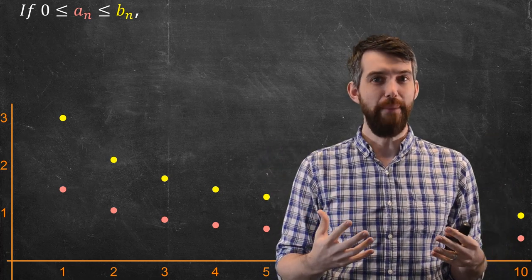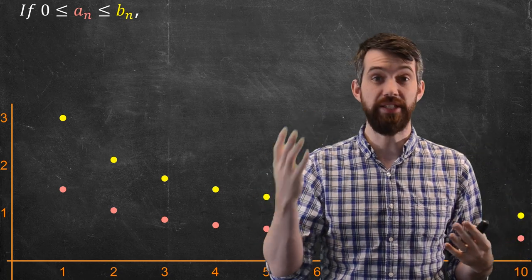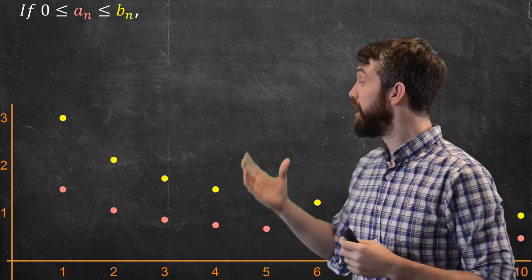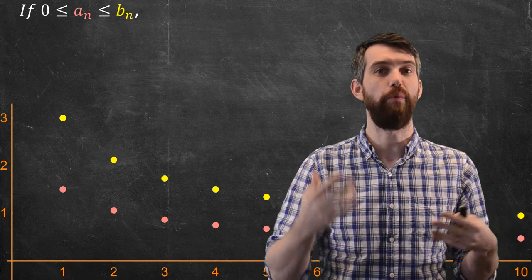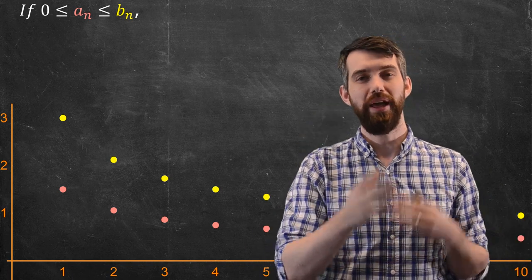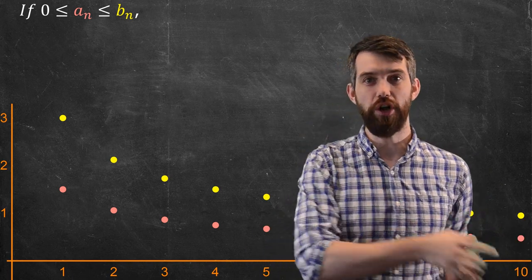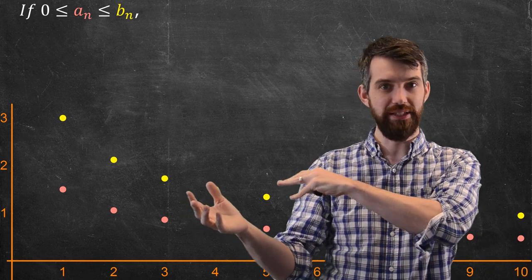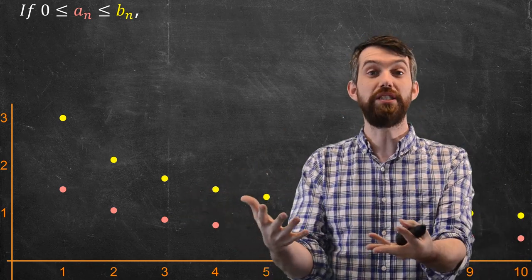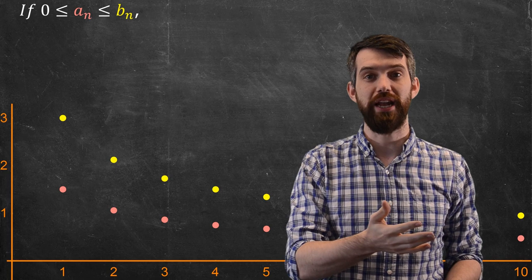For instance, imagine that the series, the sum of the ANs, was a divergent series. The smaller of those two, when you added them up, went off to infinity. Well, then the BNs, which are bigger than the ANs, they're bigger than a divergent series, so they must be divergent as well.